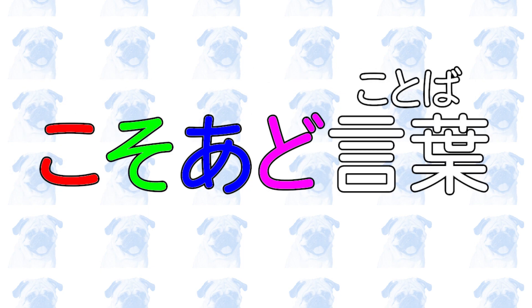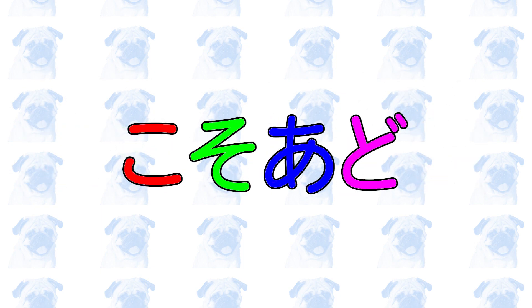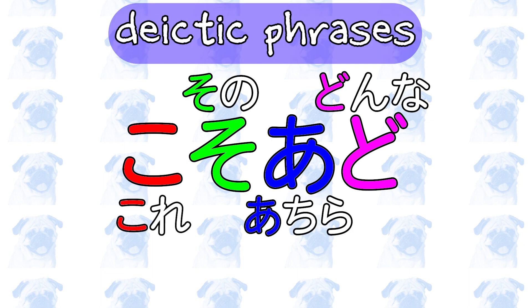In this video, you will learn about one extremely important grammatical concept in Japanese: koso-ado-kotoba. The four letters ko, so, a, do represent the initial letters of many of the deictic expressions in Japanese.